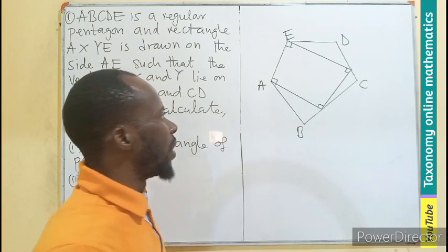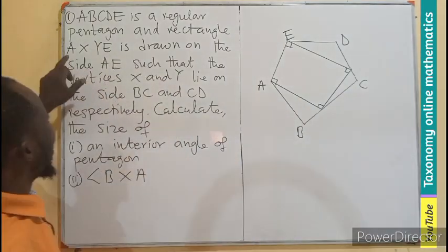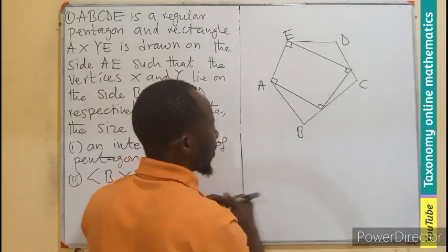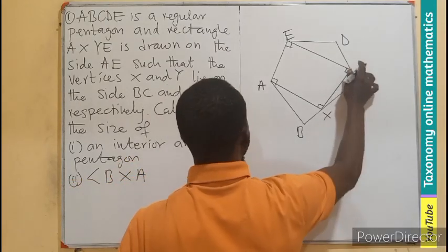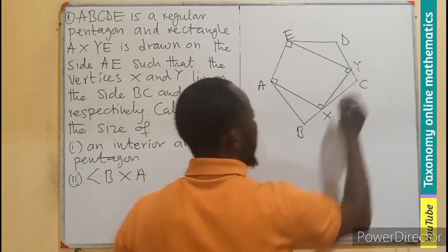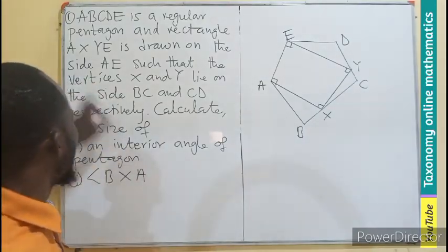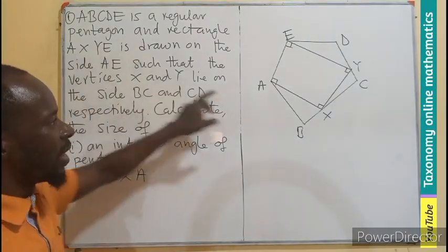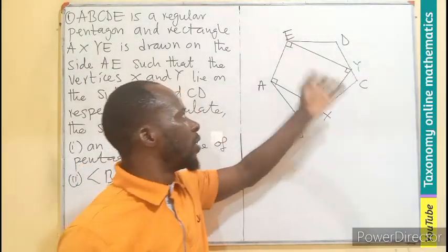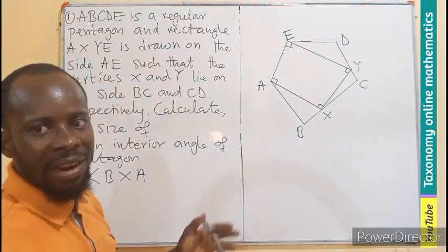We know all the angles of a rectangle is what? The same, 90 degrees. Right angle. So we are saying that rectangle AXYE. That's the vertices. So we can see A, X, Y, E. A, X, Y, E. So we have that diagram being drawn.